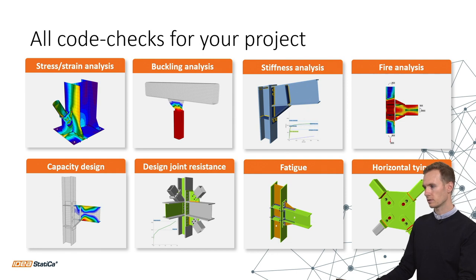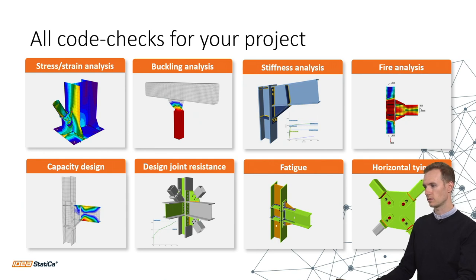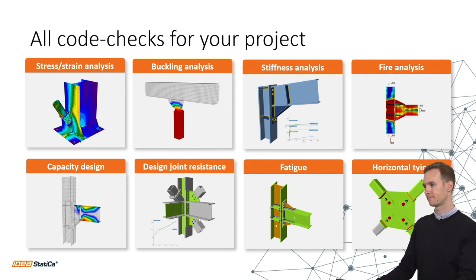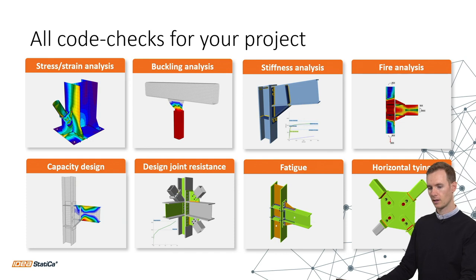There is also stiffness analysis, where you can get the rotational stiffness for each member in the connection and plug that into your global model. You can also classify members as pinned, semi-rigid, or rigid. Additionally, you can do fire analysis, capacity design analysis with plastic hinges for seismic design, design joint resistance, fatigue, and horizontal tying analysis.